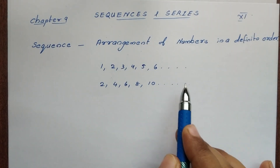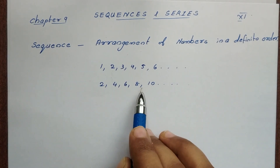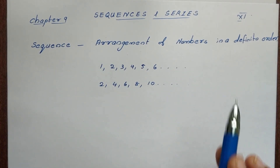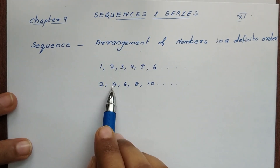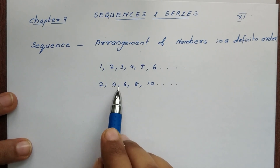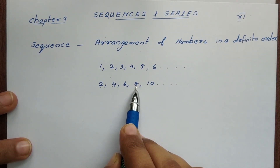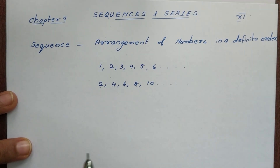We can separate these numbers and write them in a particular order. This is 2 plus 2 is 4, 4 plus 2 is 6, 6 plus 2 is 8 — this is a particular order.